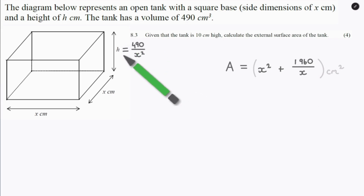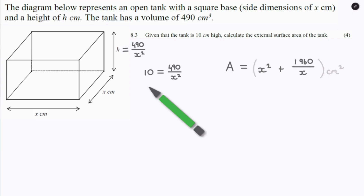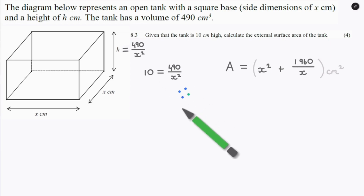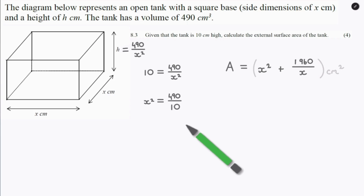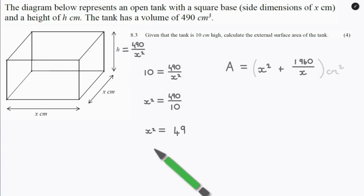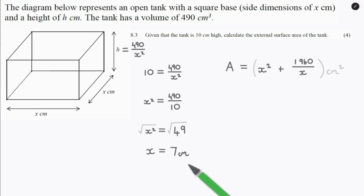We make the necessary replacement and swap h for 10, giving us 10 equals 490 over x squared. We swap the 10 and the x squared to begin isolating x. So x squared equals 490 divided by 10, which is simply 49. To get rid of the square on x, we take the square root of both sides, giving us x equals 7 centimetres.